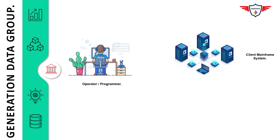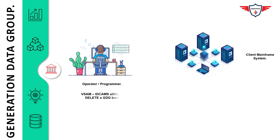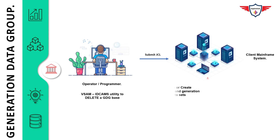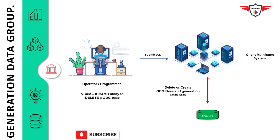To delete a GDG base or a generation data group, you need to follow two simple steps. First, prepare a JCL that uses the IDCAMS utility with the delete GDG command. Second, submit that job on the mainframe system. If you have access to the mainframe system, you can submit the job on your own; otherwise, you can request the operator to submit it on your behalf.